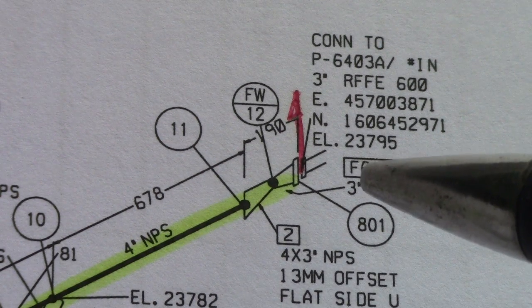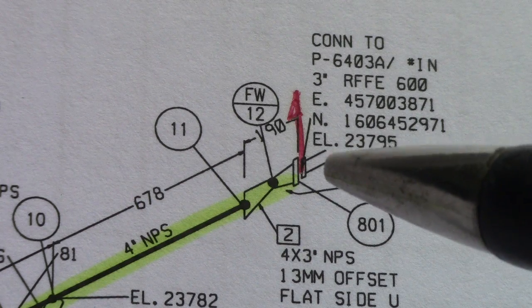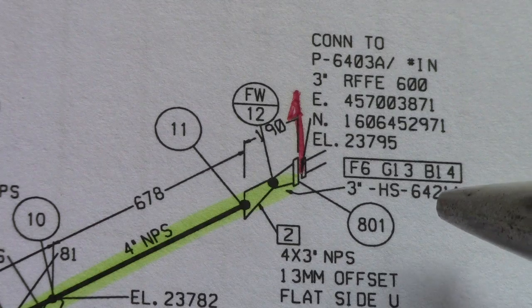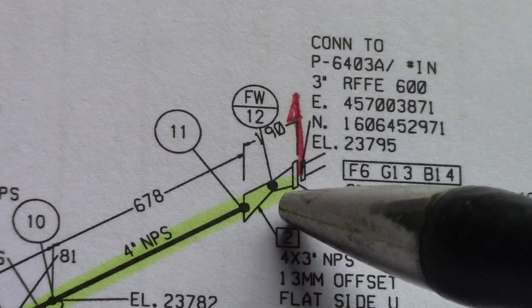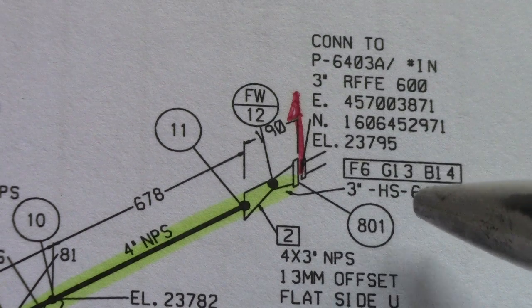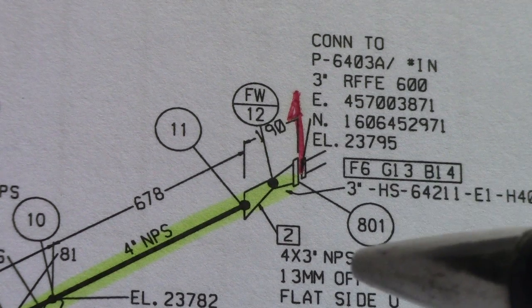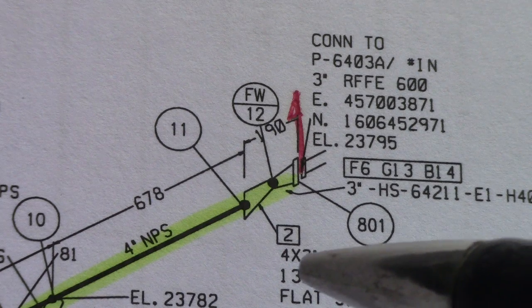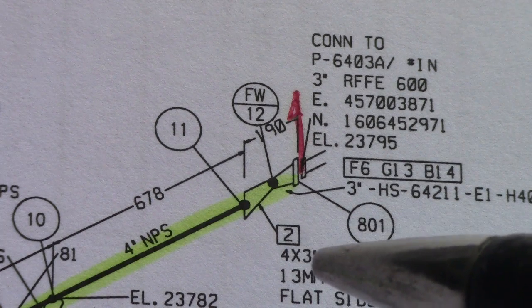Of course you must check the gasket and bolts in the material description - what is the code and specification. What type of bolts are you using based on isometric, what gasket are you using based on isometric and material description.